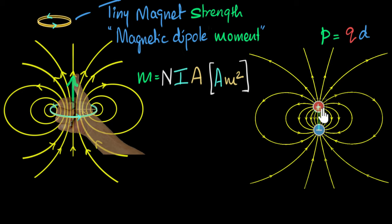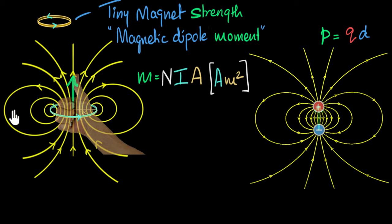Because electric fields start from one monopole and end into the other — starting from positive and ending at negative — always. But for magnetism, we don't have monopoles; we only have dipoles. Therefore, magnetic field lines don't start from anywhere and won't end anywhere — they always form closed loops. In magnetism, we only have dipoles, no monopoles.